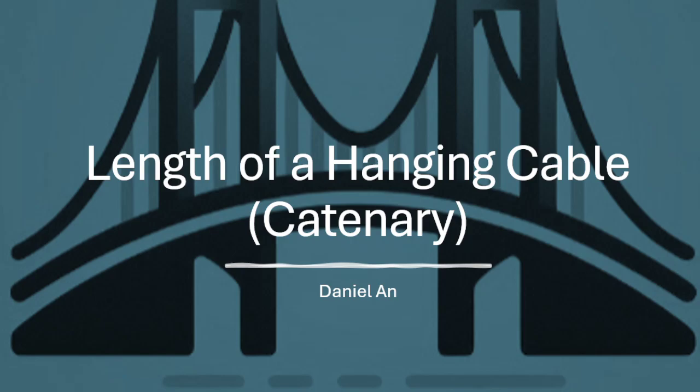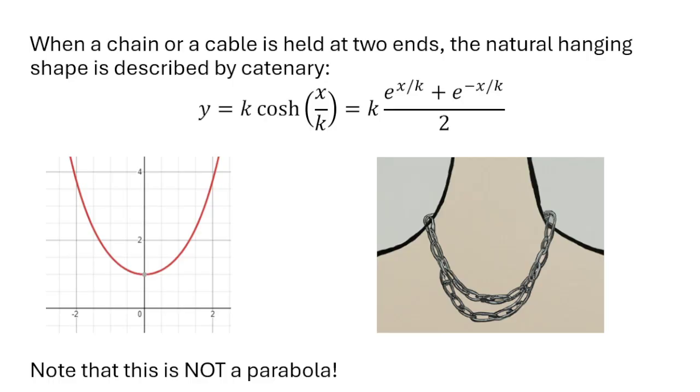Let's talk about the length of a hanging cable, also known as catenary. If you see a cable or a chain that is held at two ends, for example like a chain necklace, the natural hanging shape is described by the catenary.